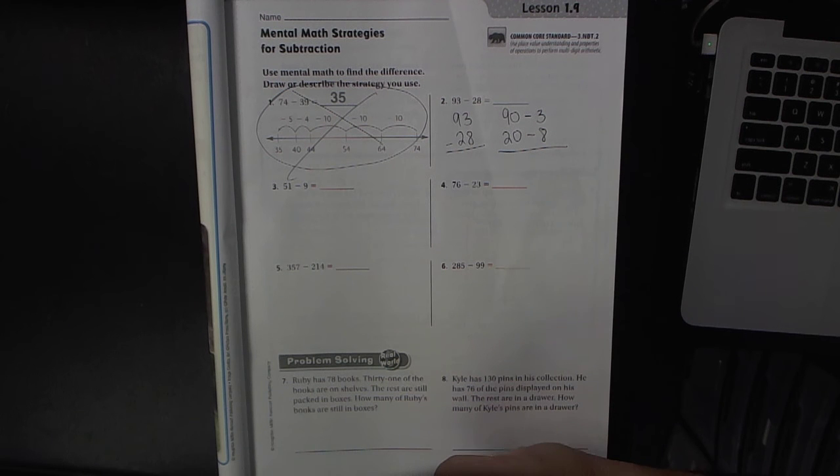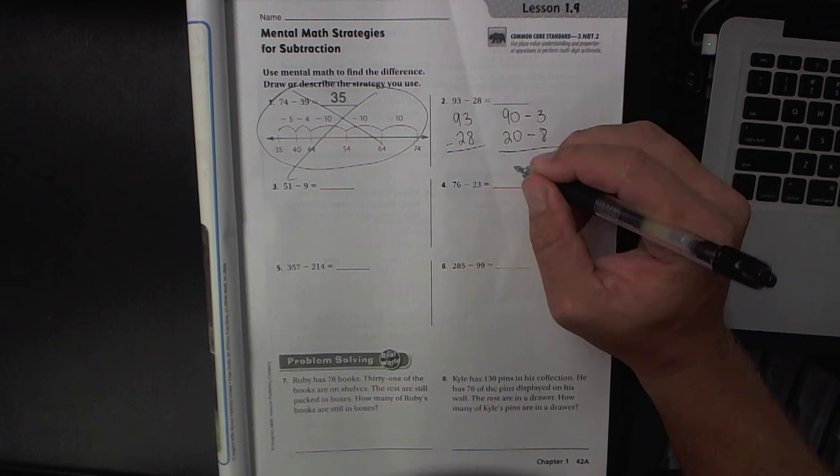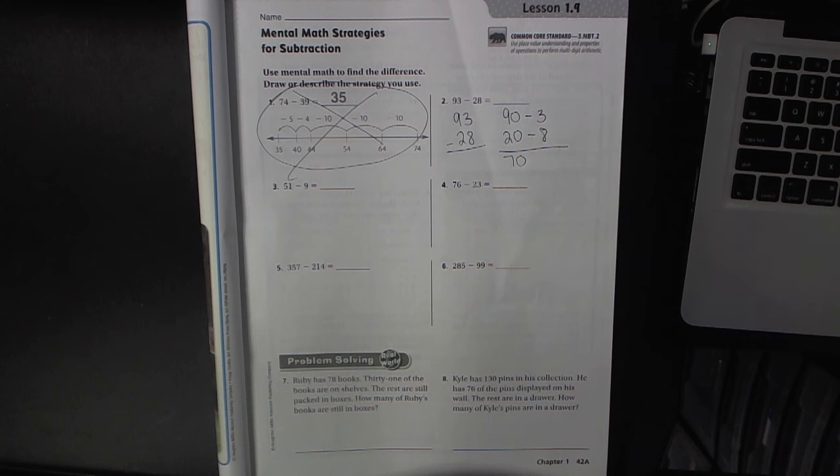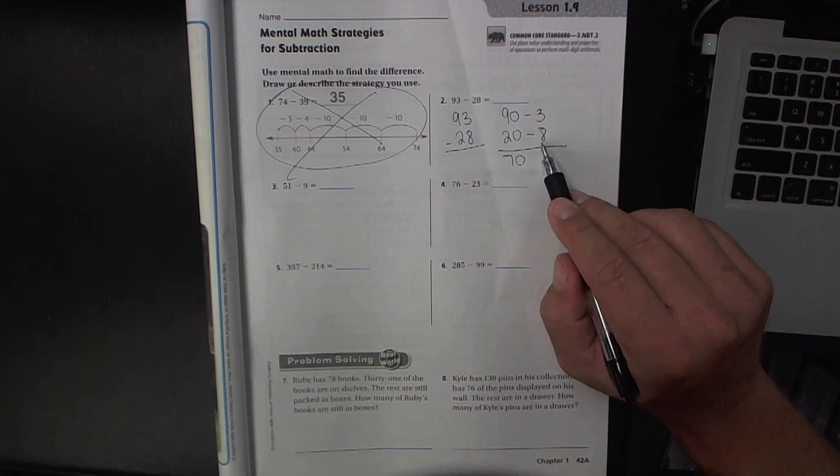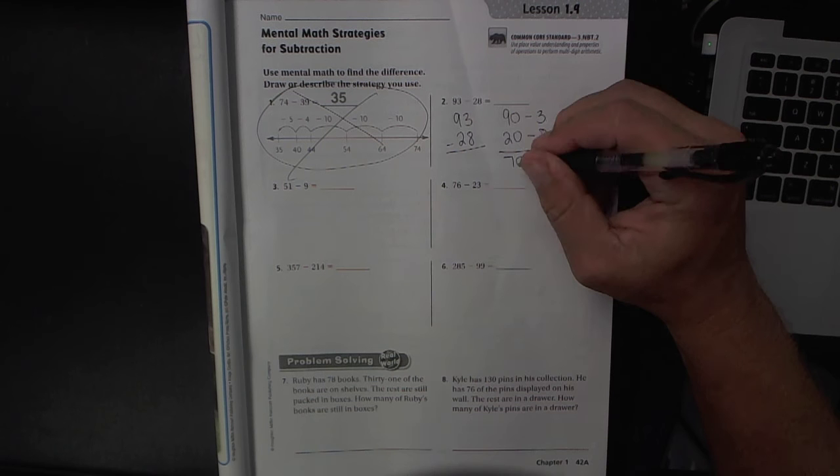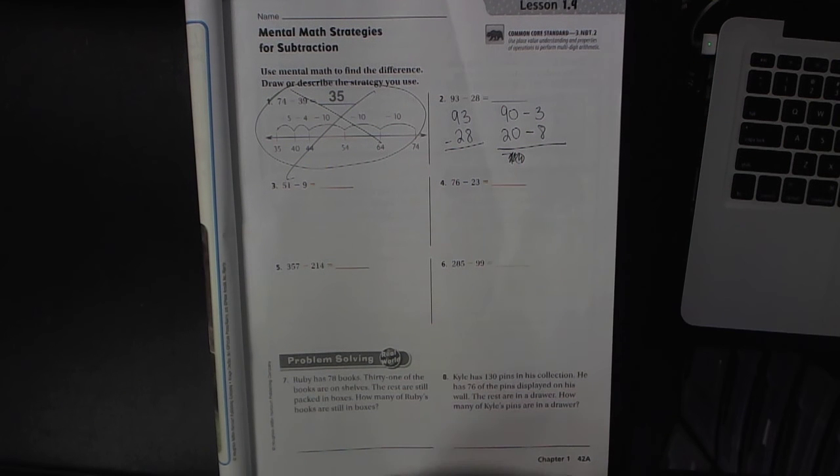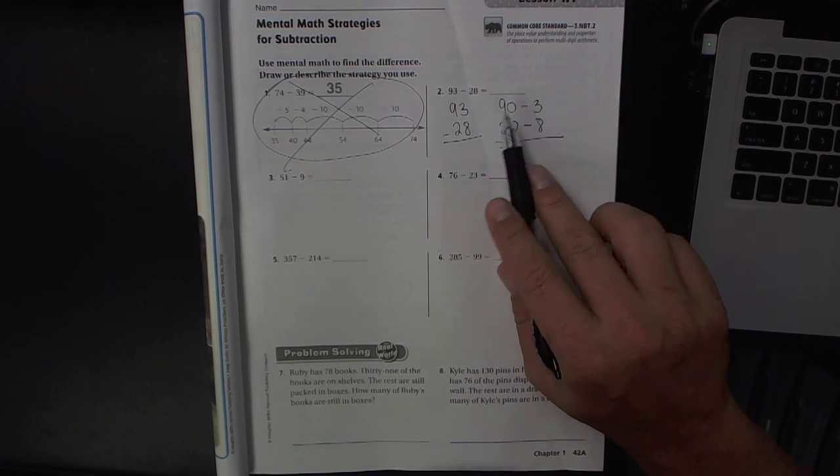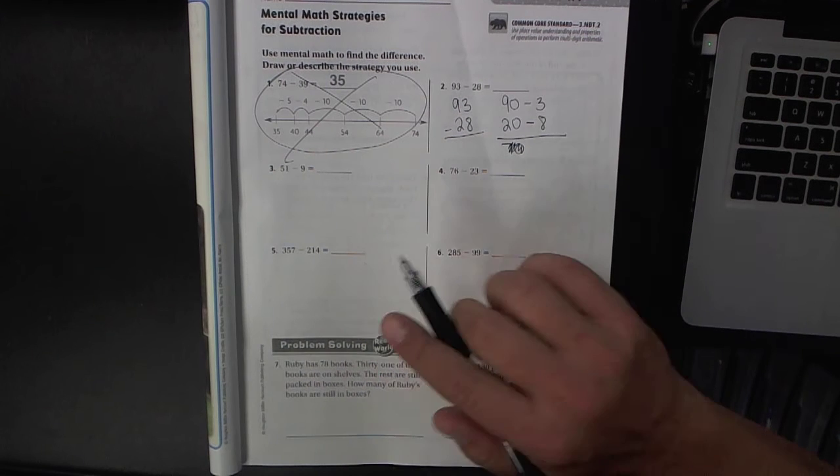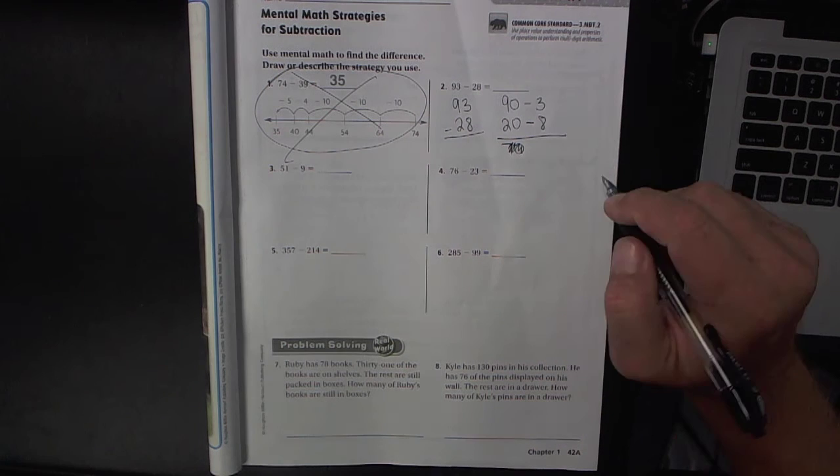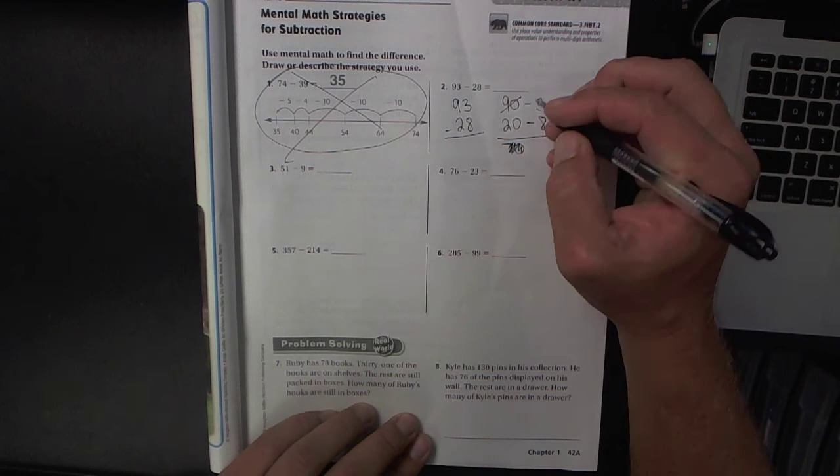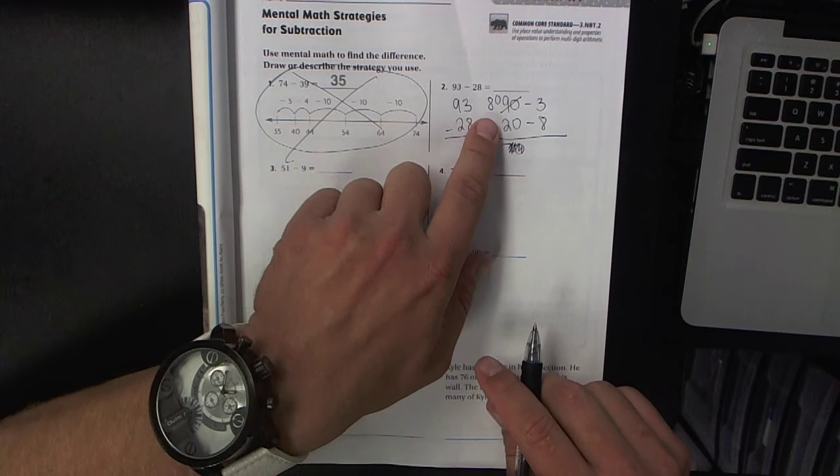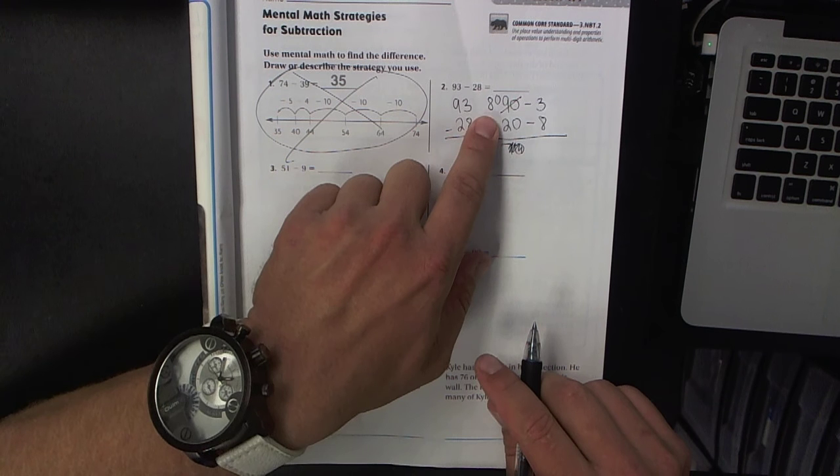Now you're going to subtract 90 minus 20 is 70. Oh, I actually made a mistake here, I didn't even look. I should have started on the right-hand side. Well that's just a good reminder that you need to start on the right-hand side in case you need to borrow. So I cannot take away eight from three, so I need to borrow from the 90. The 90 becomes 80.